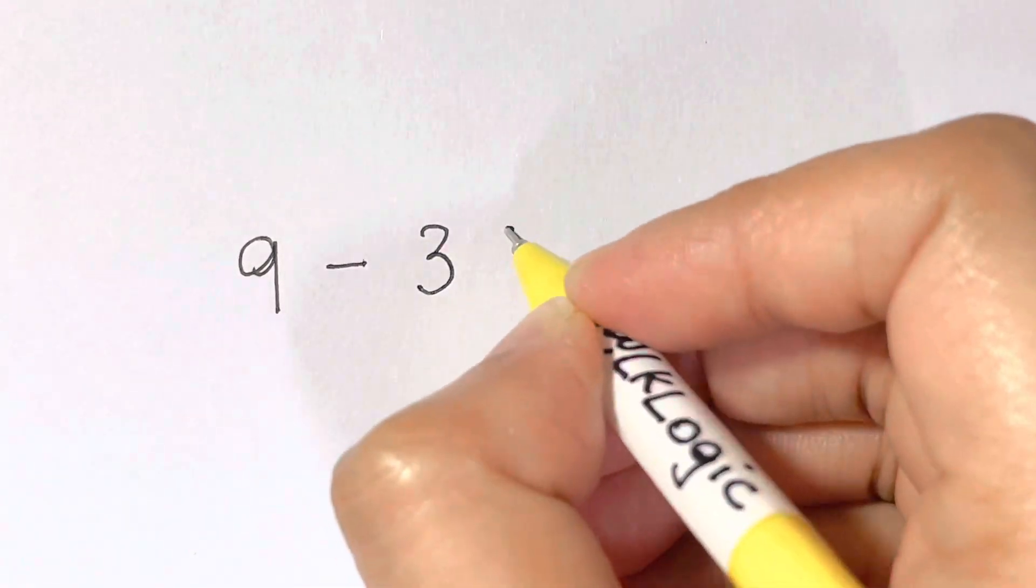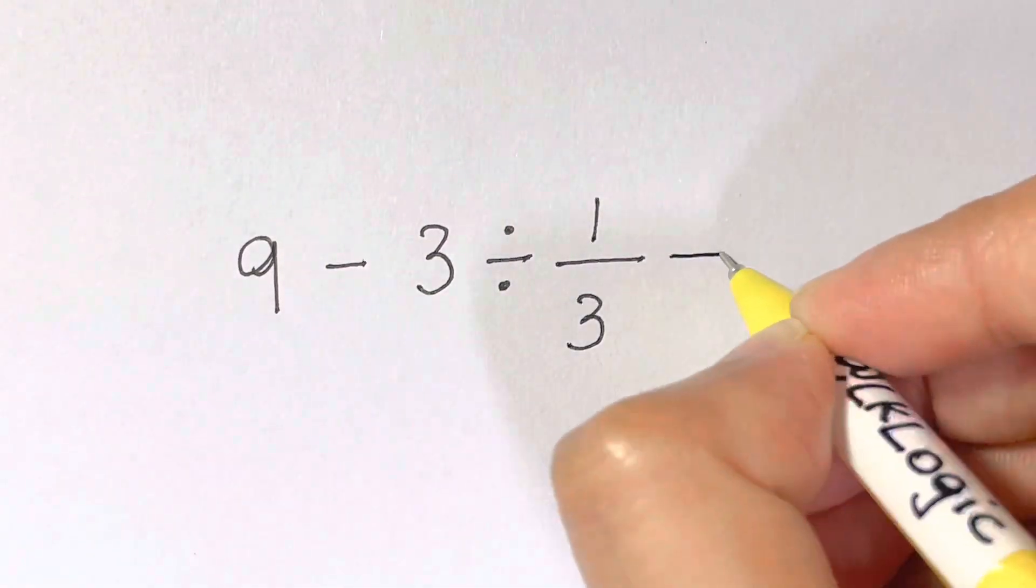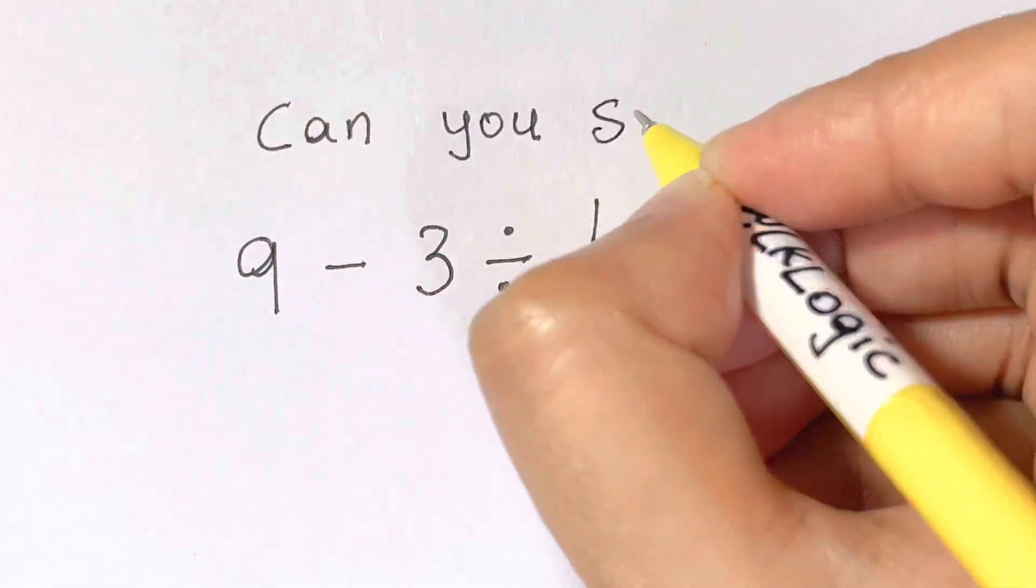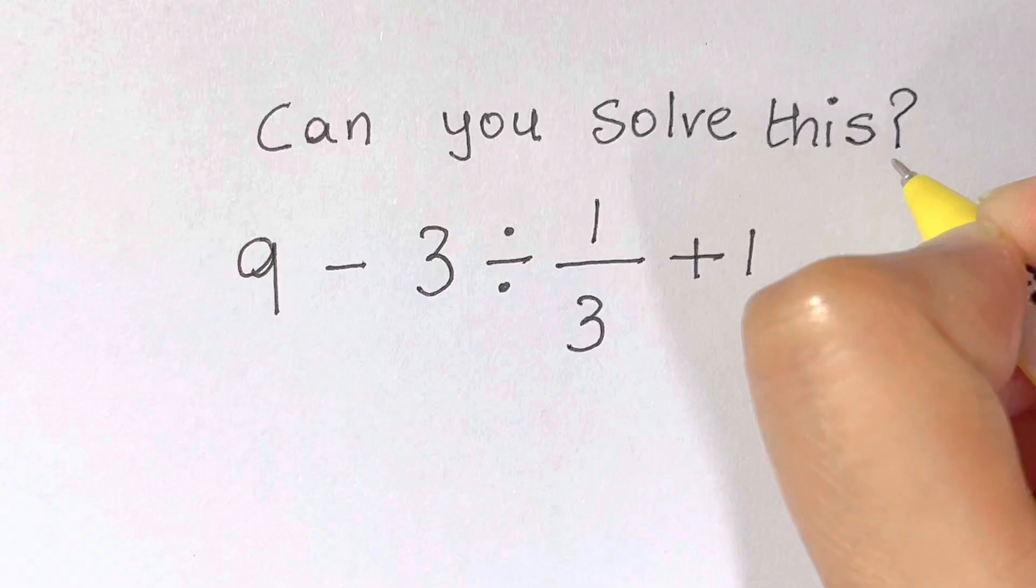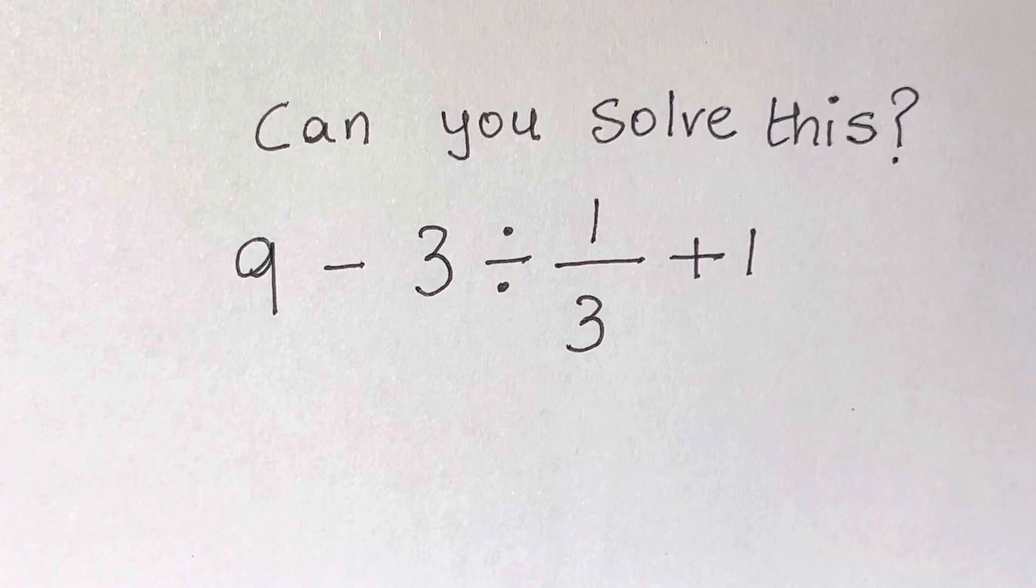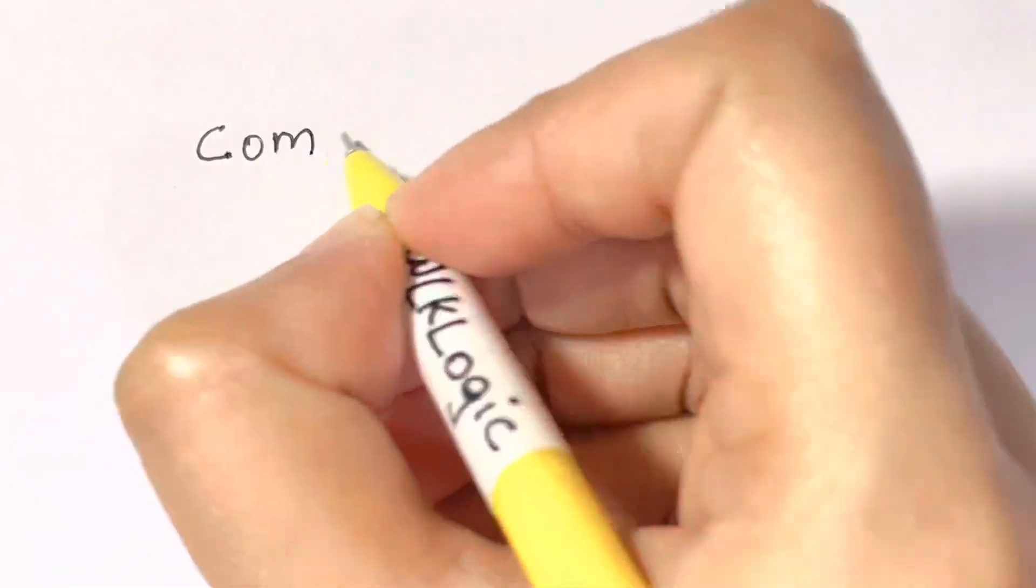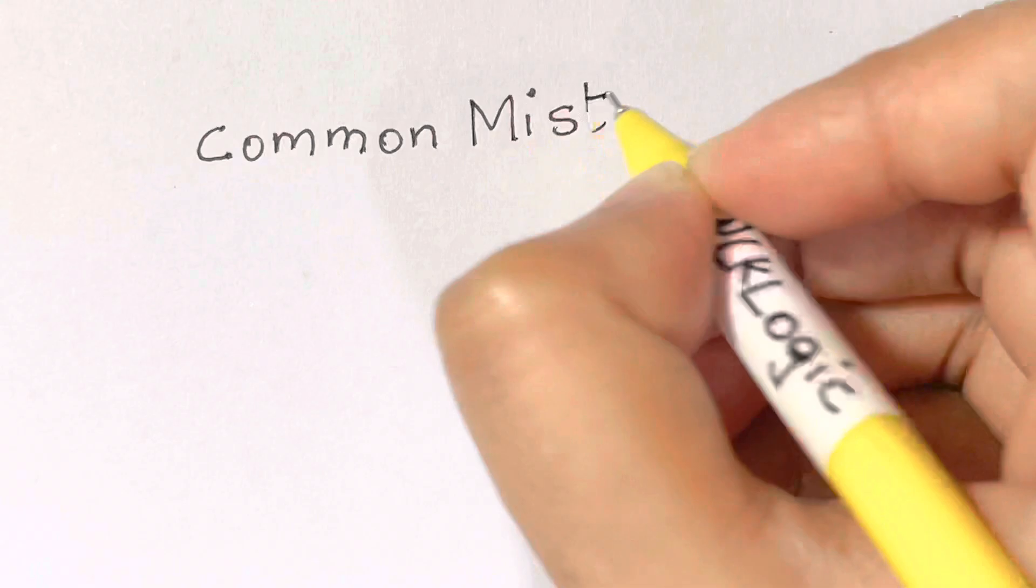Can you solve this problem which went viral in Japan? A recent test found that only 60 percent of Japanese 20-year-olds were able to get the correct answer. This is alarming because it is down from 90 percent, which was the accuracy rate in the 1980s. Can you figure it out?